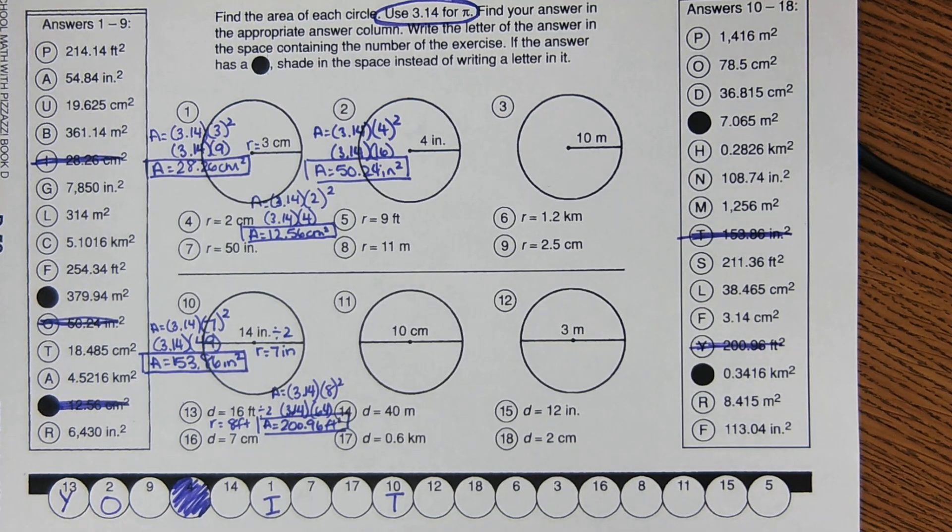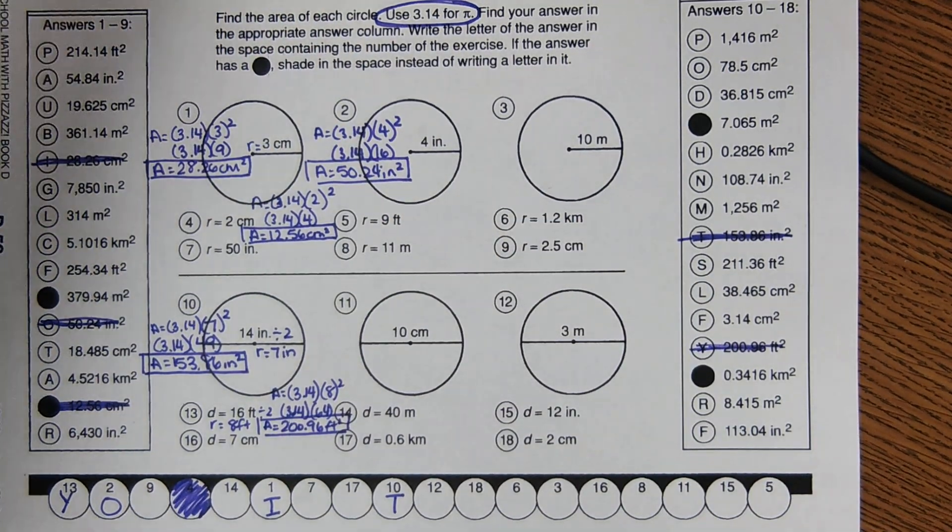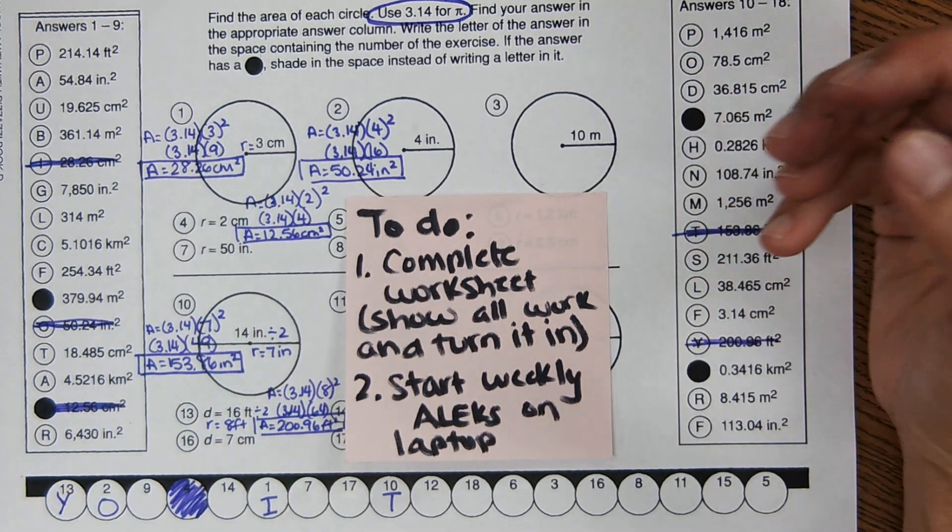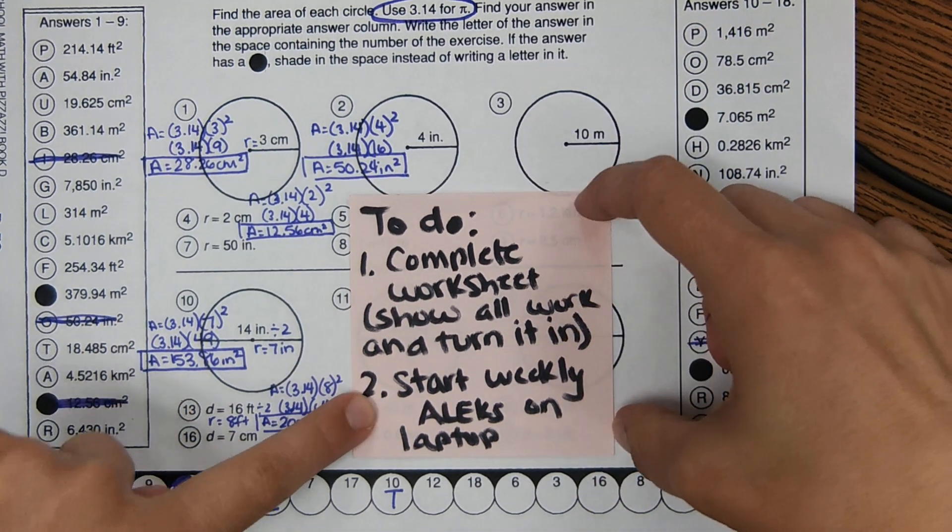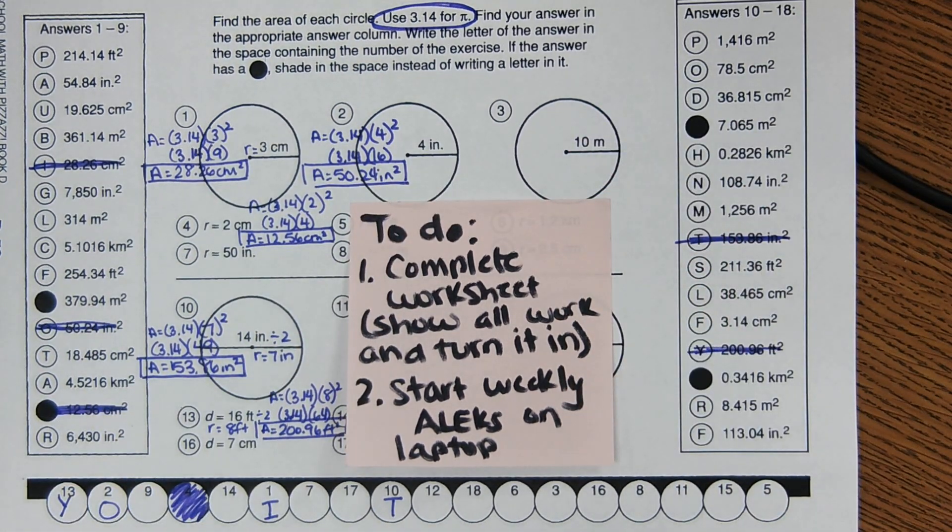Okay. And that's all. So what I need you to do is to finish this here. Get my instructions. So your to-do list is to complete this worksheet, show all your work and turn it in. When you're done with that, grab a laptop and start your weekly Alex on a laptop. So go ahead and grab a-